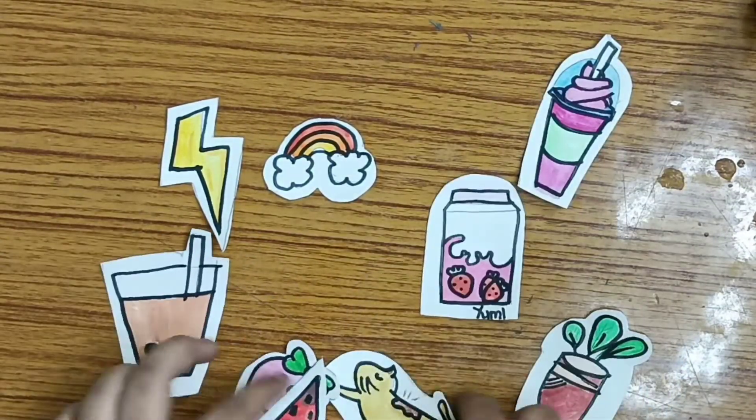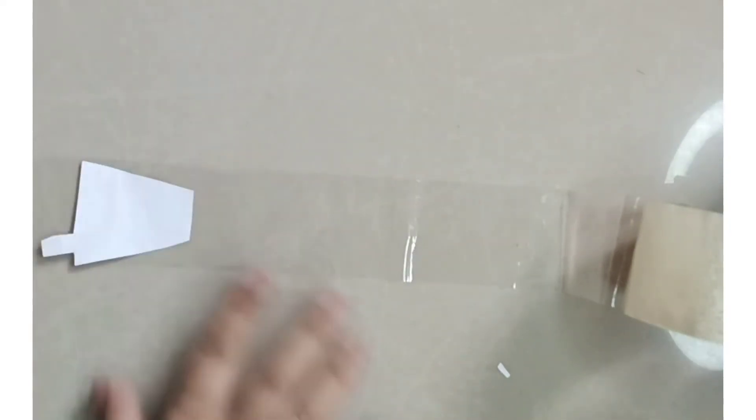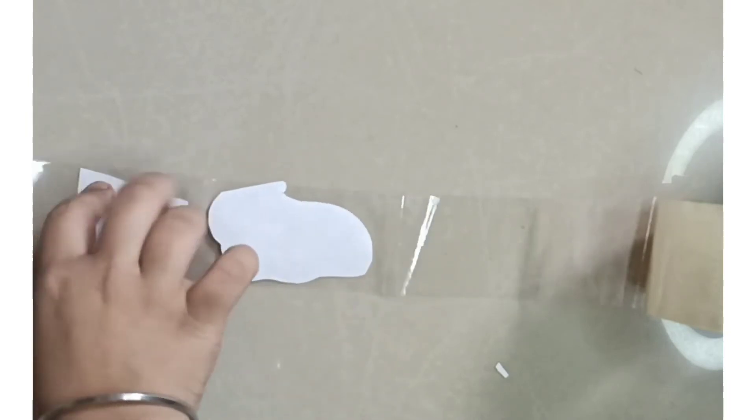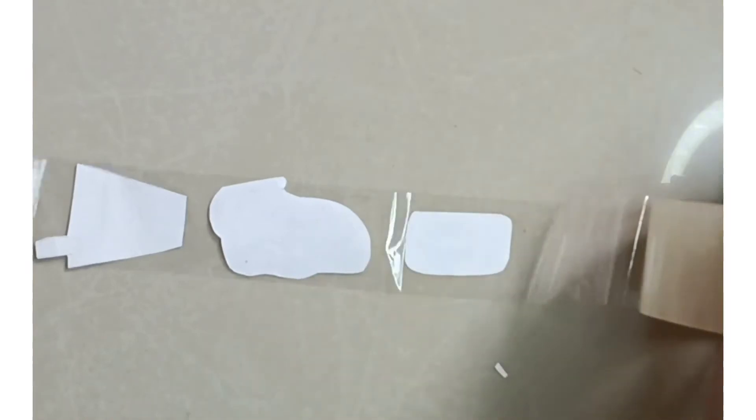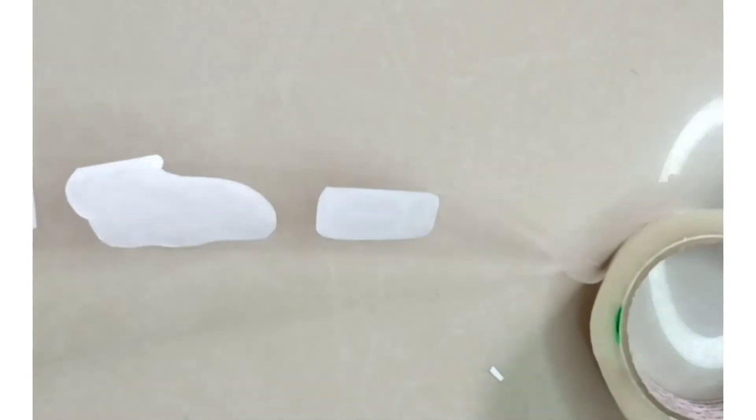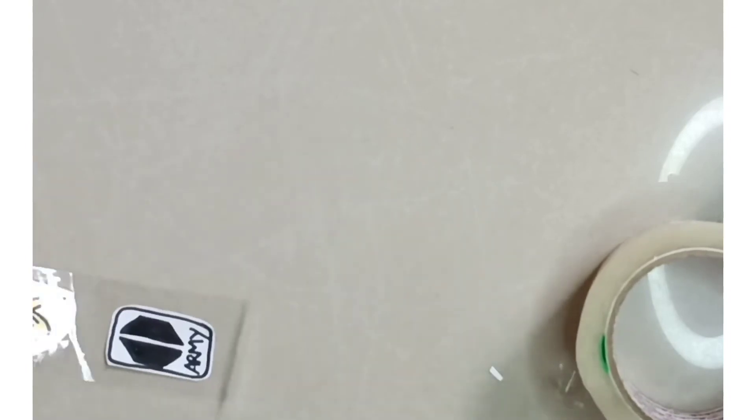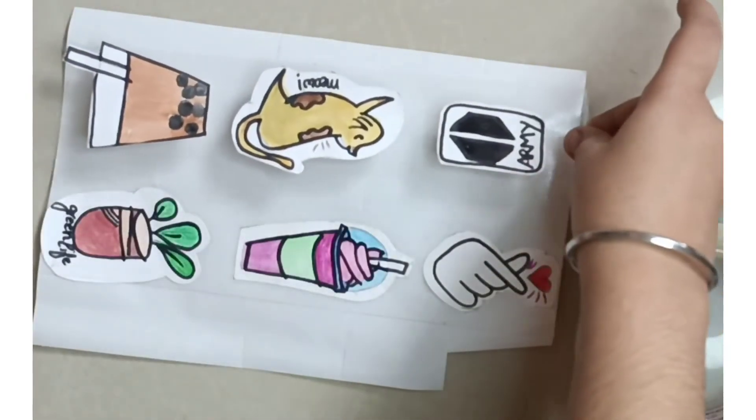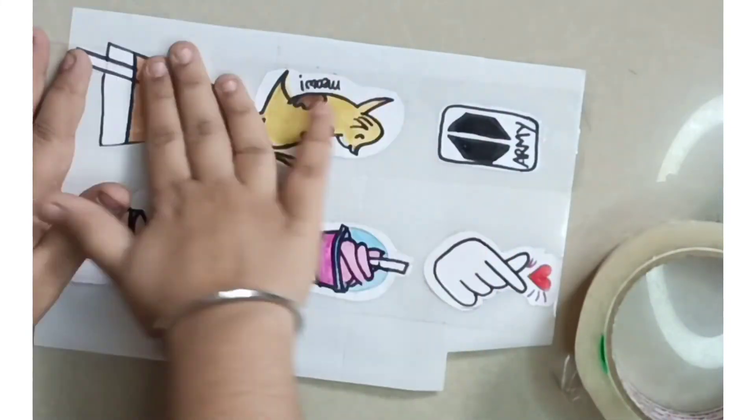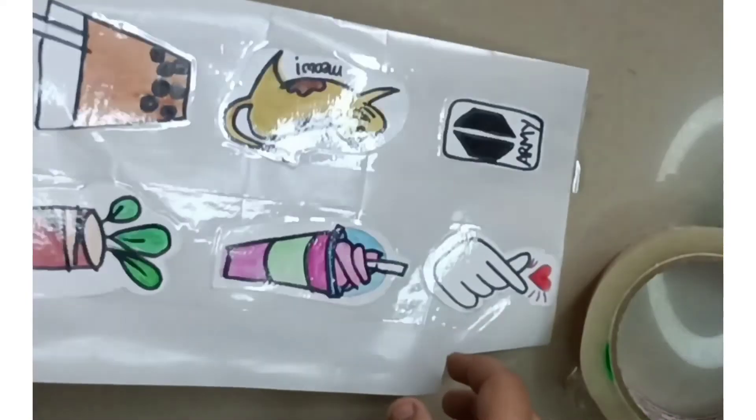Now we will cut out the stickers and stick them with tape. You will need to cut with more attention because the tape is sticky. Now I have used butter paper, which I have used to paste the stickers. Now we will cut it from the outline so that when we peel the sticker, we can stick it easily.